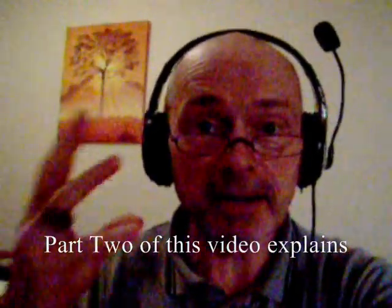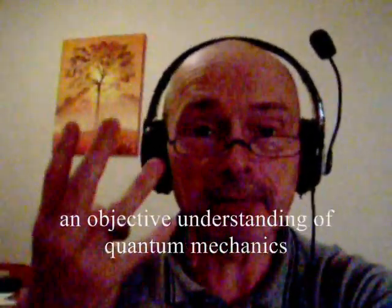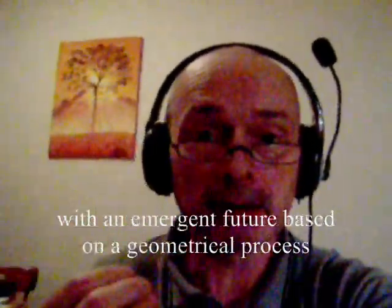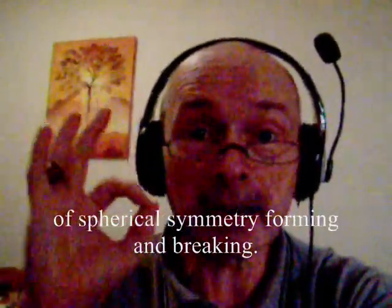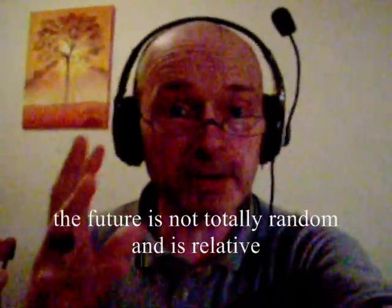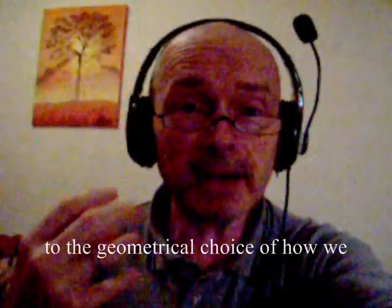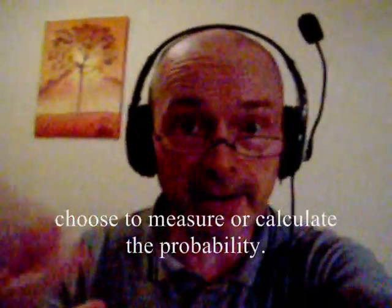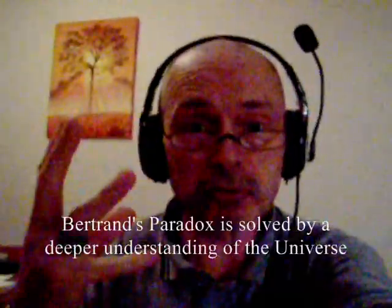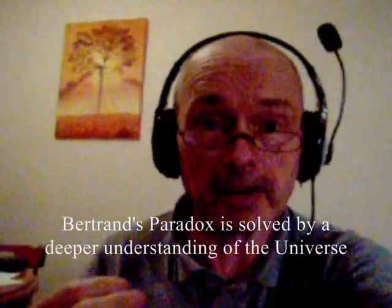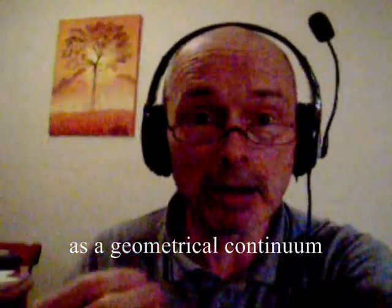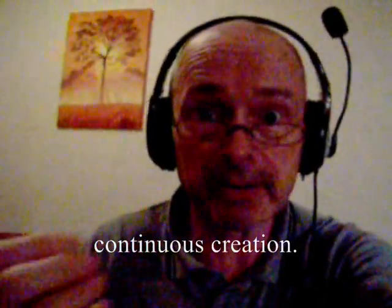Part 2 of this video explains an objective understanding of quantum mechanics with an emergency based on a geometrical process of spherical symmetry forming and breaking. Within such a process, the future is not totally random and is relative to the geometrical choice of how we choose to measure or calculate the probability. Bertrand's paradox is solved by a deeper understanding of the universe as a geometrical continuum of continuous energy exchange, continuous creation.